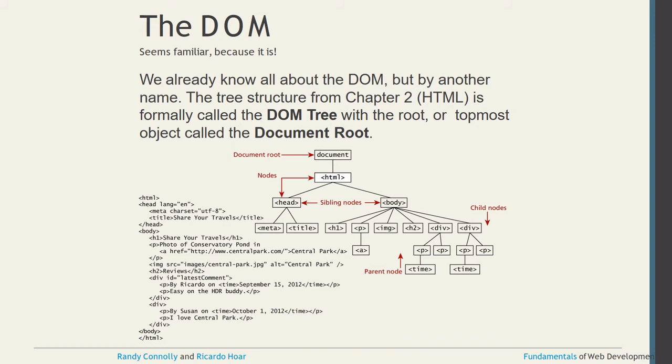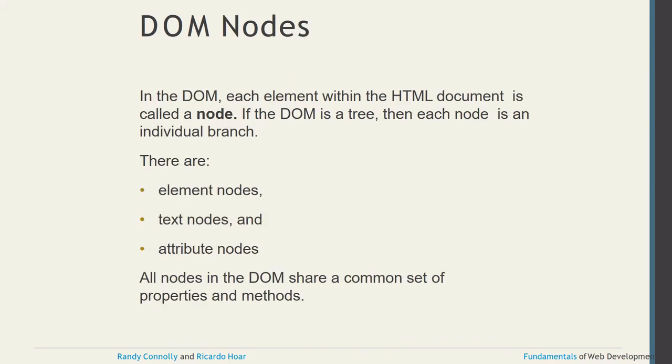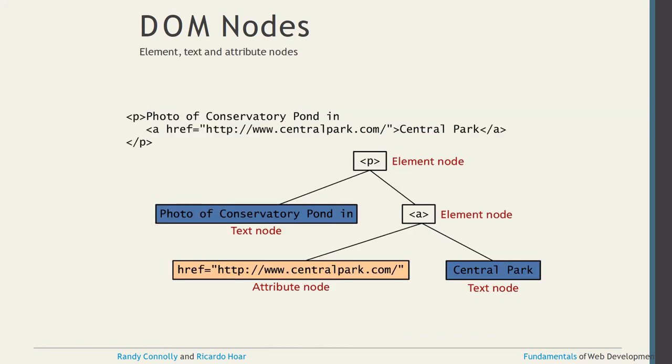In the DOM, each element within the HTML document is called a node. The DOM is a tree and each node is an individual branch. There are three types of nodes: element nodes, text nodes, and attribute nodes. All nodes in the DOM share a common set of properties and methods.